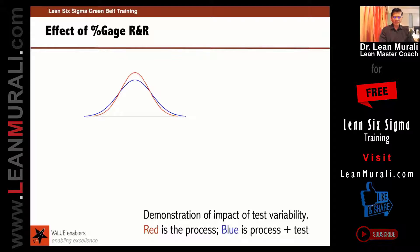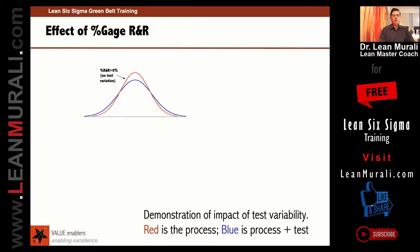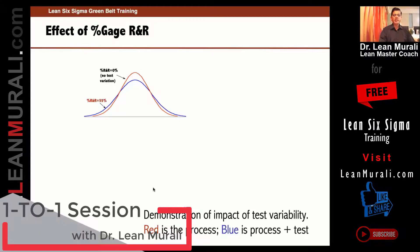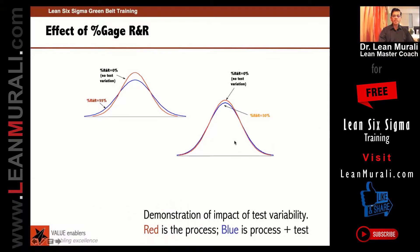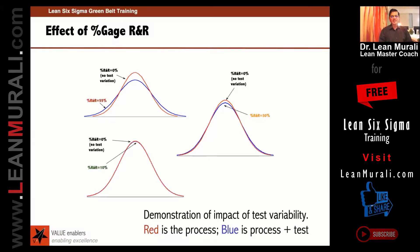The effect of gauge R&R: suppose as a demonstration of the impact of test variability — if red is the process, the process spread increases to blue because the gauge or measurement device is also causing an issue. If gauge R&R percentage repeatability and reproducibility is zero, there is no test variation and it will be equivalent to the process. If it is something like 55 percent, it will add to the variation and the curve will expand at the bottom. If it is 30 percent, maybe the peak will come down a little bit. If it is 10 percent, it is almost equal to the process variation. This is to help you understand that 10 percent is very good.